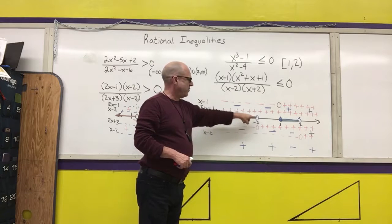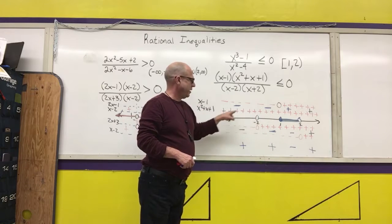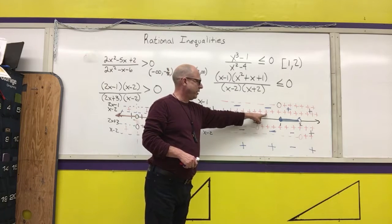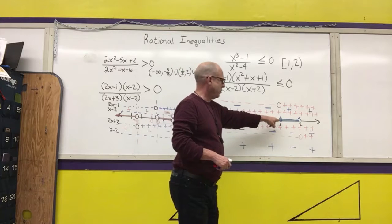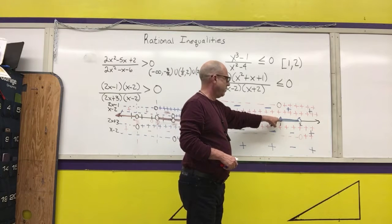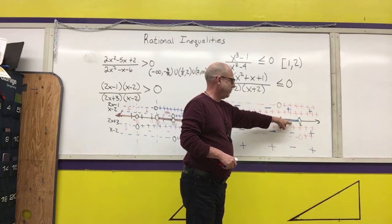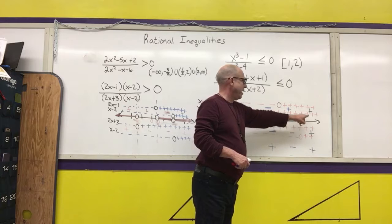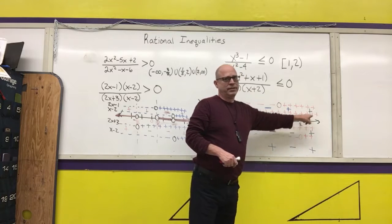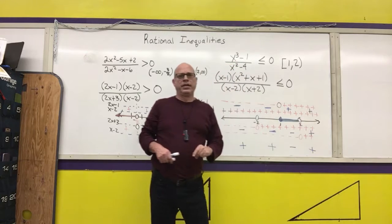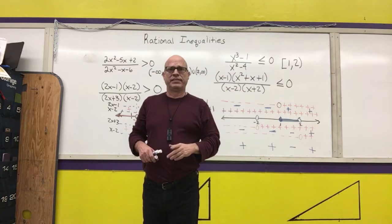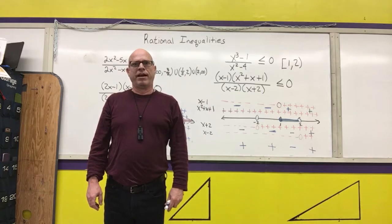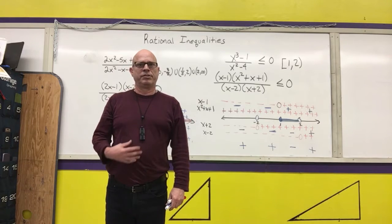The only time my graph is negative or equal to zero is on this interval. The graph is positive here, undefined at negative two, positive again, equal to zero at one, negative between one and two, undefined at two, and positive beyond that. That's how using rational inequalities can help you come up with a graph of a rational function.